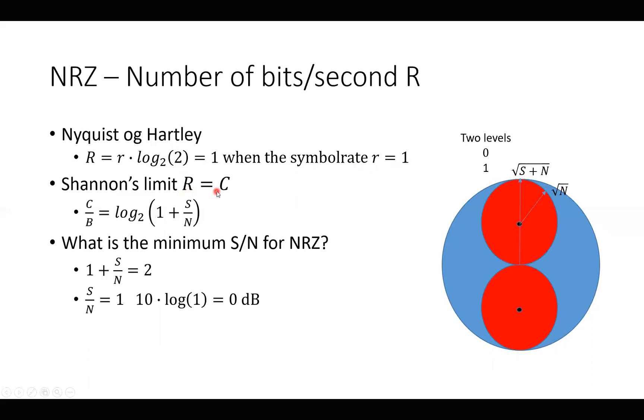And C/B will be log 2(1 + S/N). So what is the minimum S/N for NRZ? Well, it's 1 + S/N equals 2. That means that S/N must be equal to 1. And taking the logarithm, it says that the minimum S/N is 0 dB.